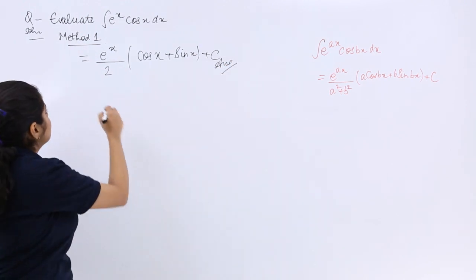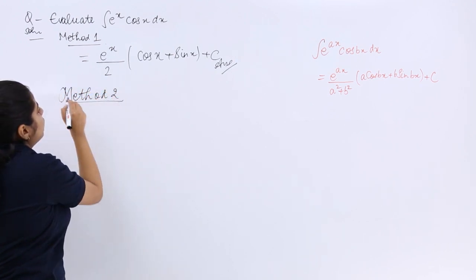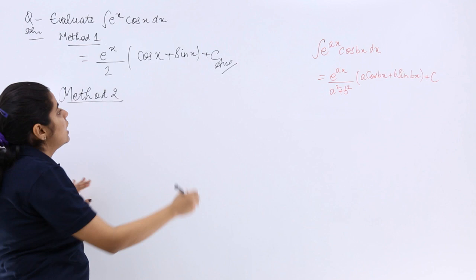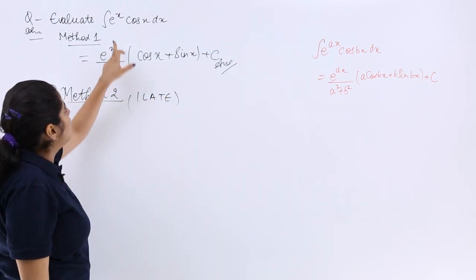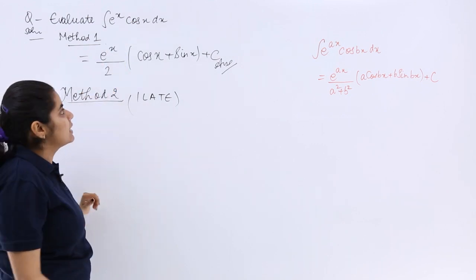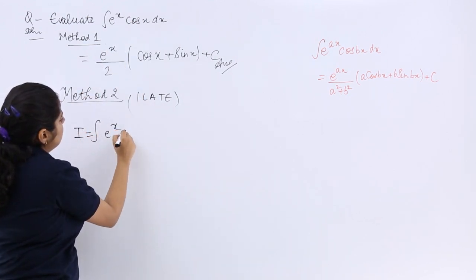The other method would be the method that you already know if you do not remember the formula. Now according to ILATE, if exponential and trigonometric is there, accordingly if my I is equal to the given question,